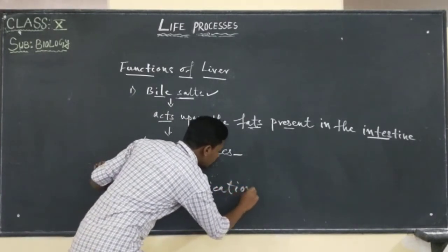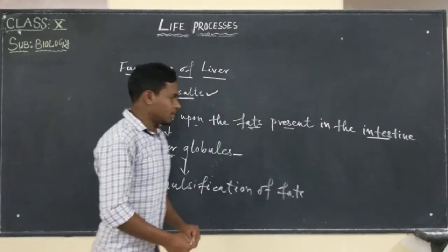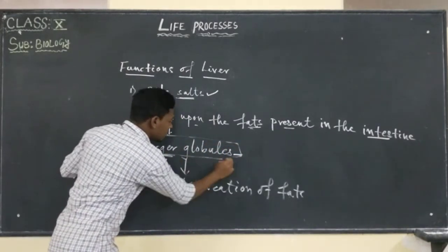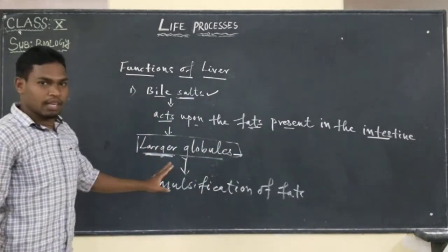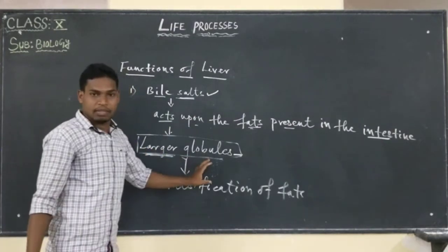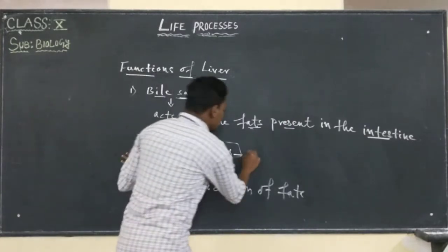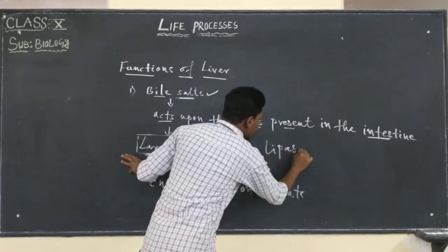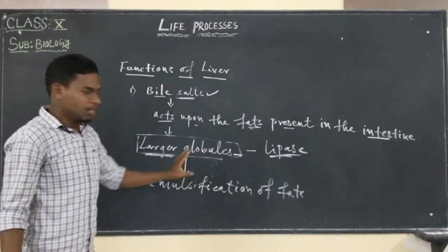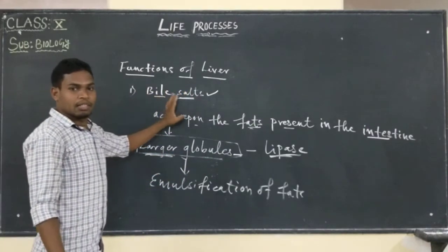Emulsification of fats. When fats are present in larger globules in the small intestine, enzymes cannot break them. The enzyme that acts upon the fat globule is lipase, which comes from the pancreas.